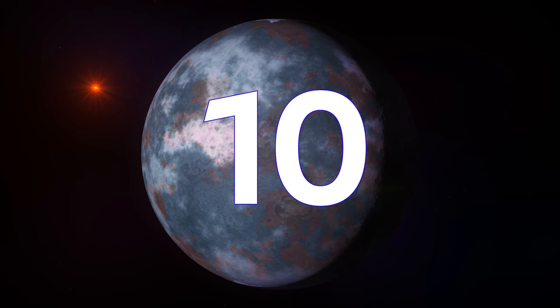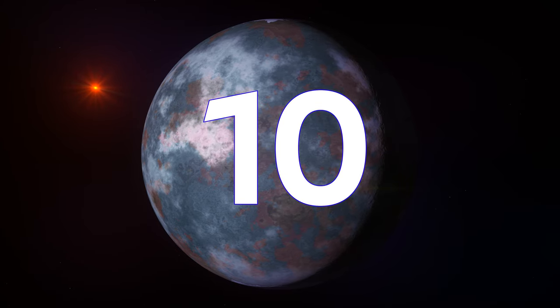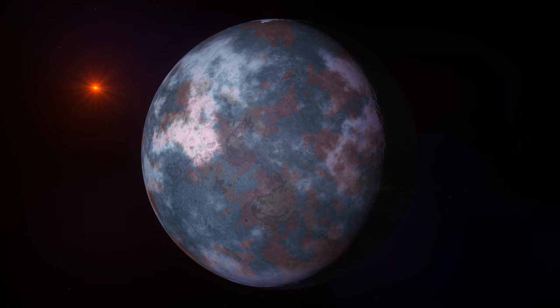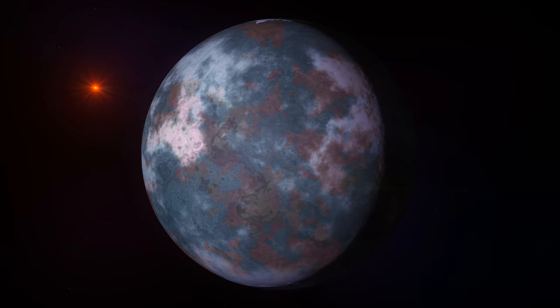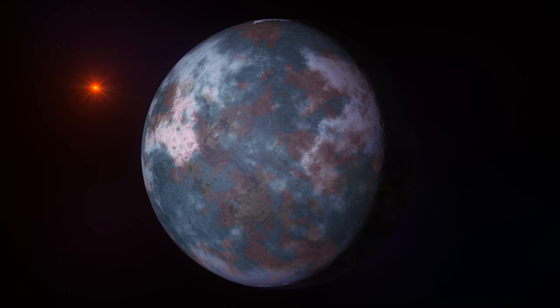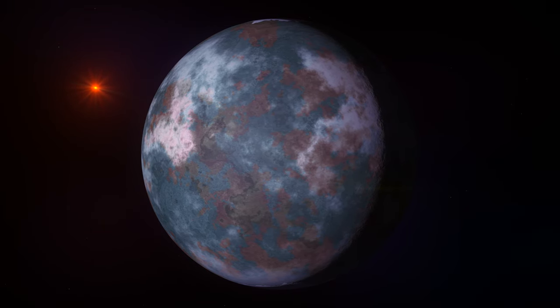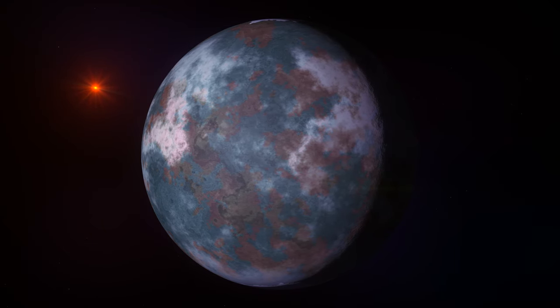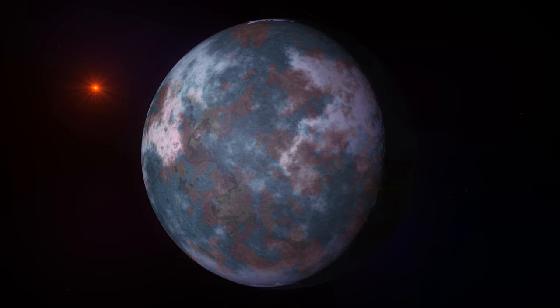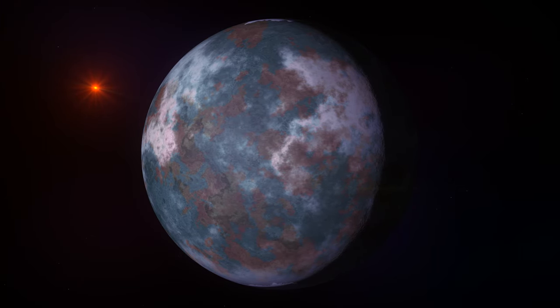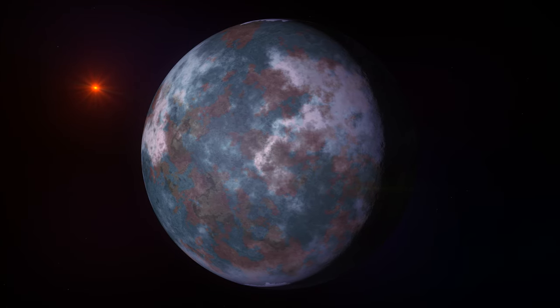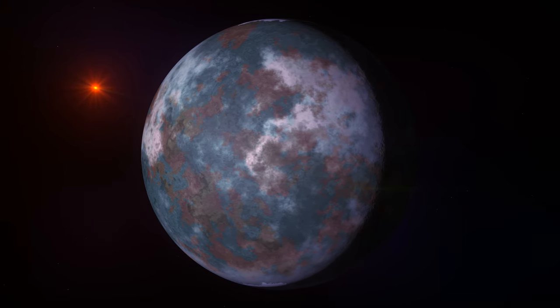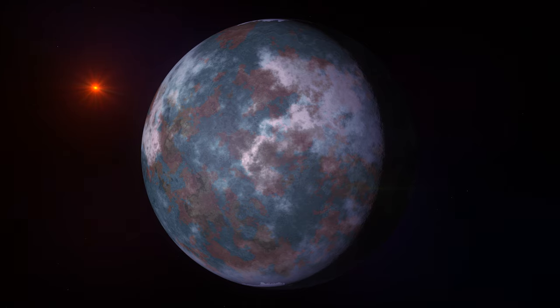Starting the list is Luyten B with an ESI of 0.85. Assuming Luyten B has an Earth-like atmosphere, it would have an average surface temperature of just 19 degrees Celsius. However, the planet weighs almost three times as much as the Earth, meaning the g-forces on the planet would be much greater. In addition, a year on Luyten B only lasts for 18 days, as its star is a red dwarf and is much cooler, allowing for a closer orbit.